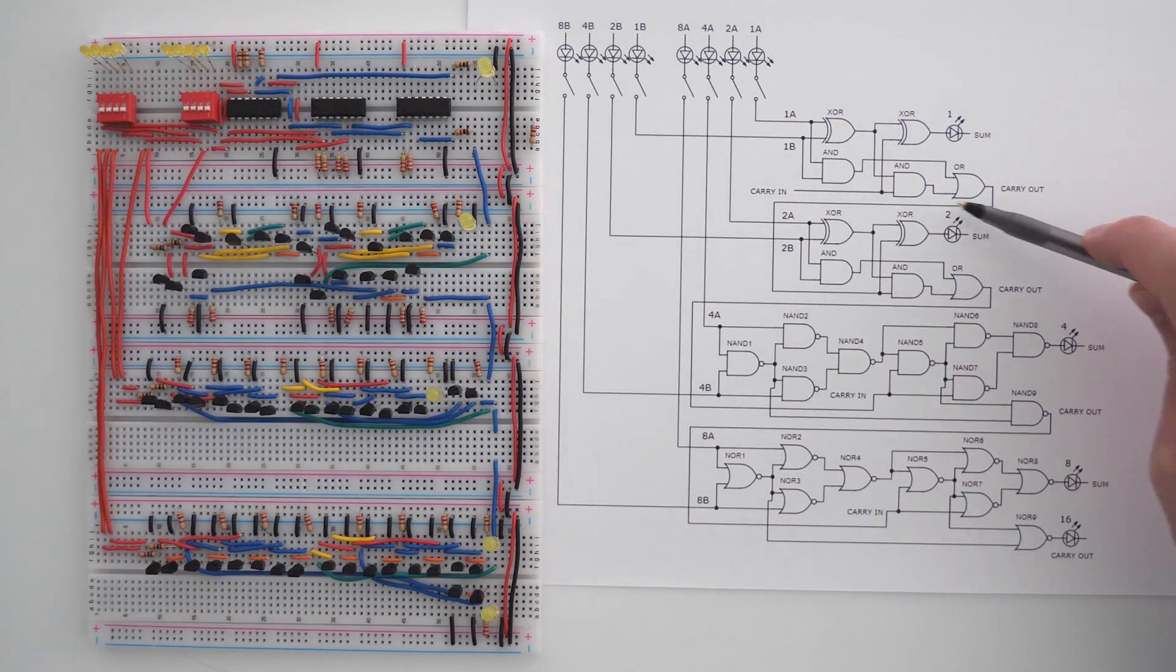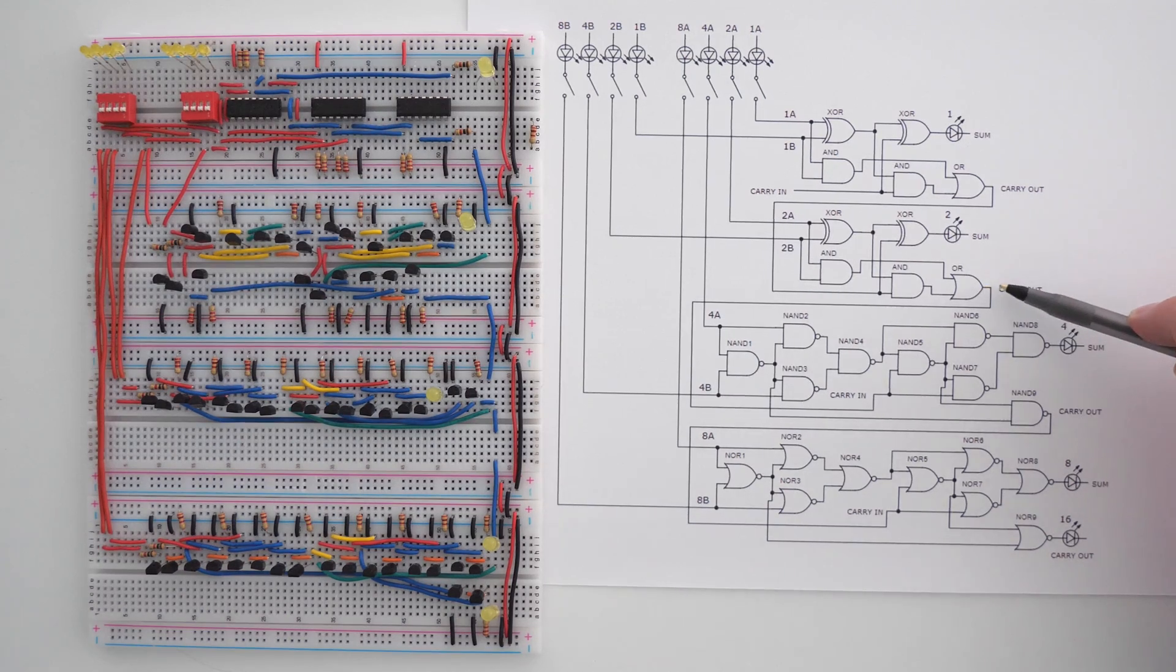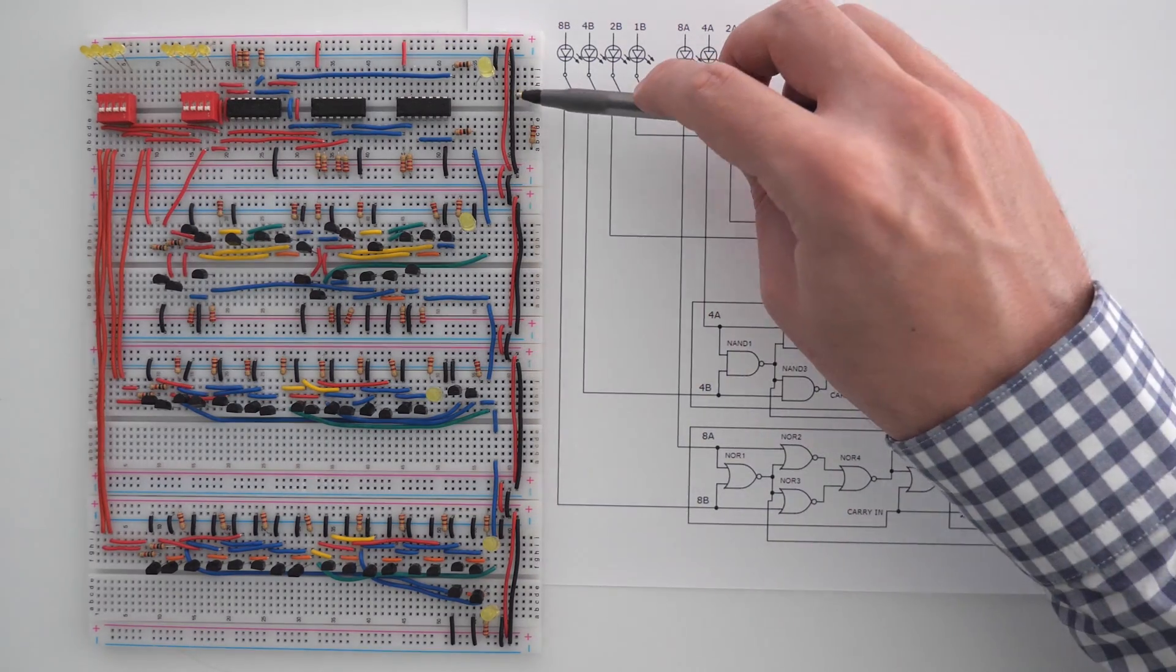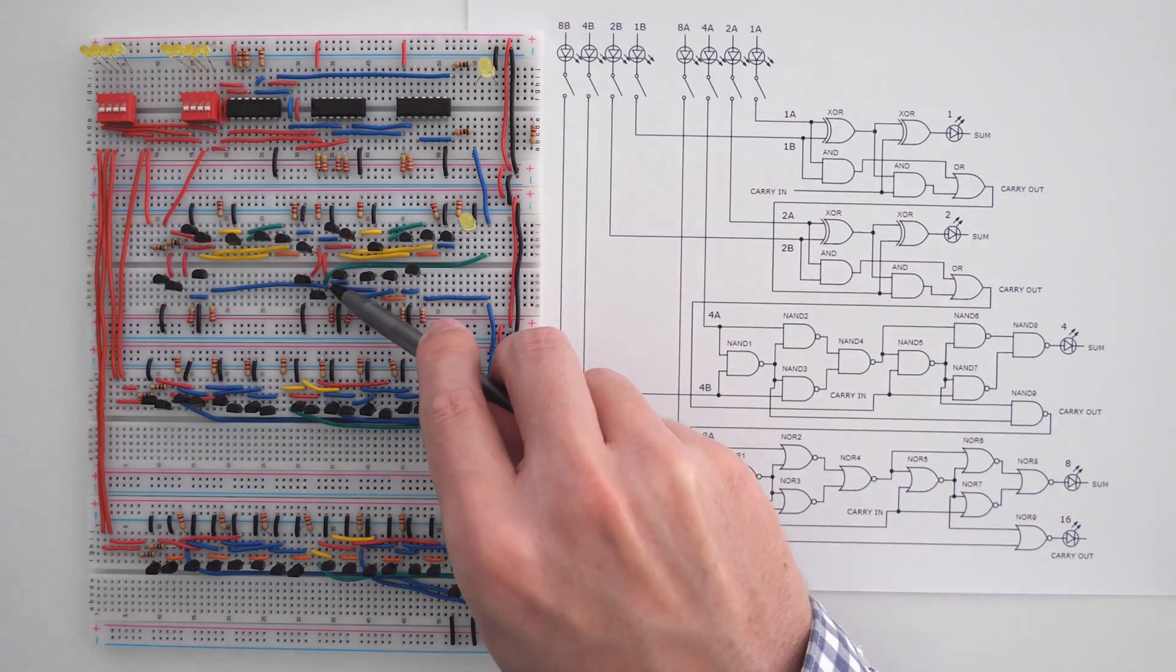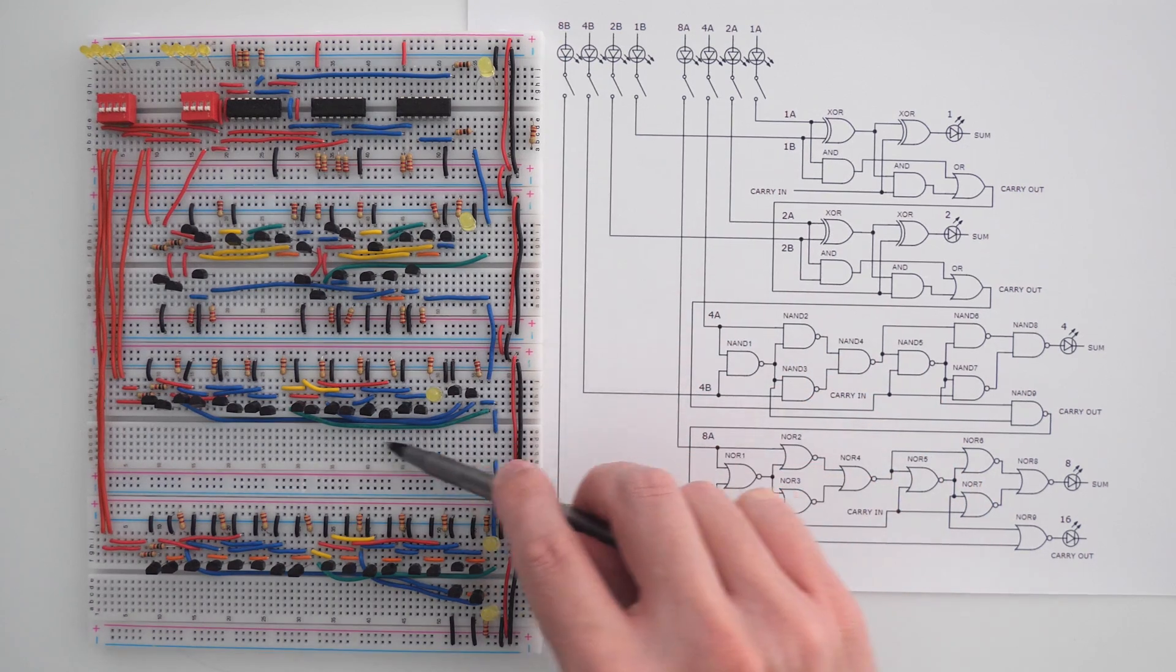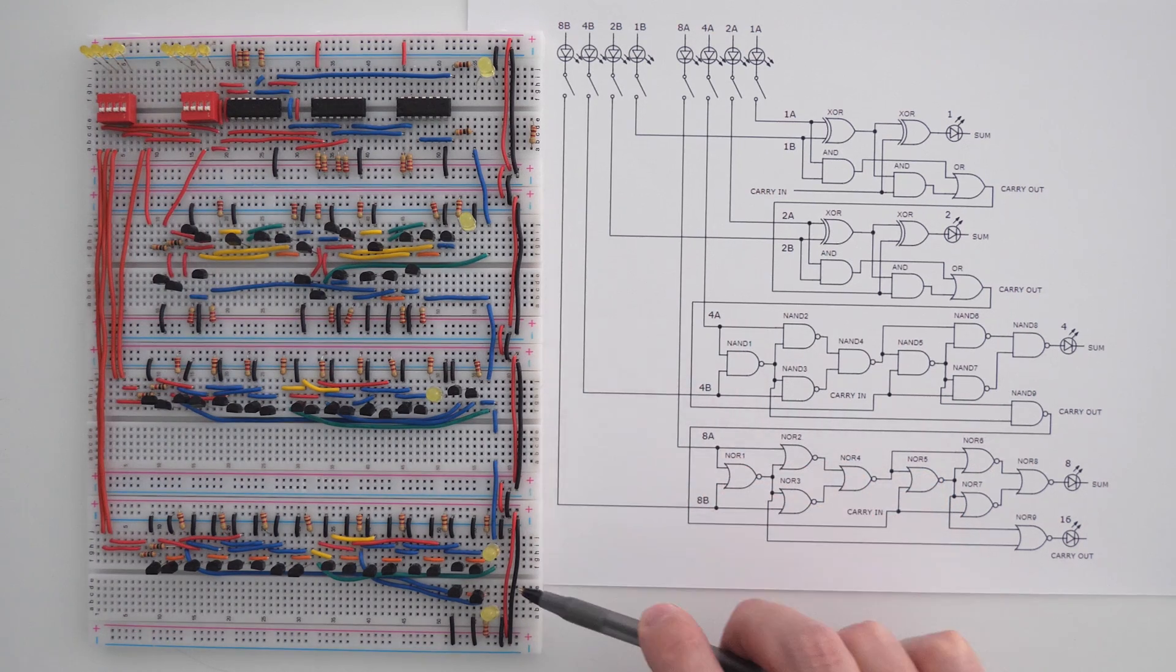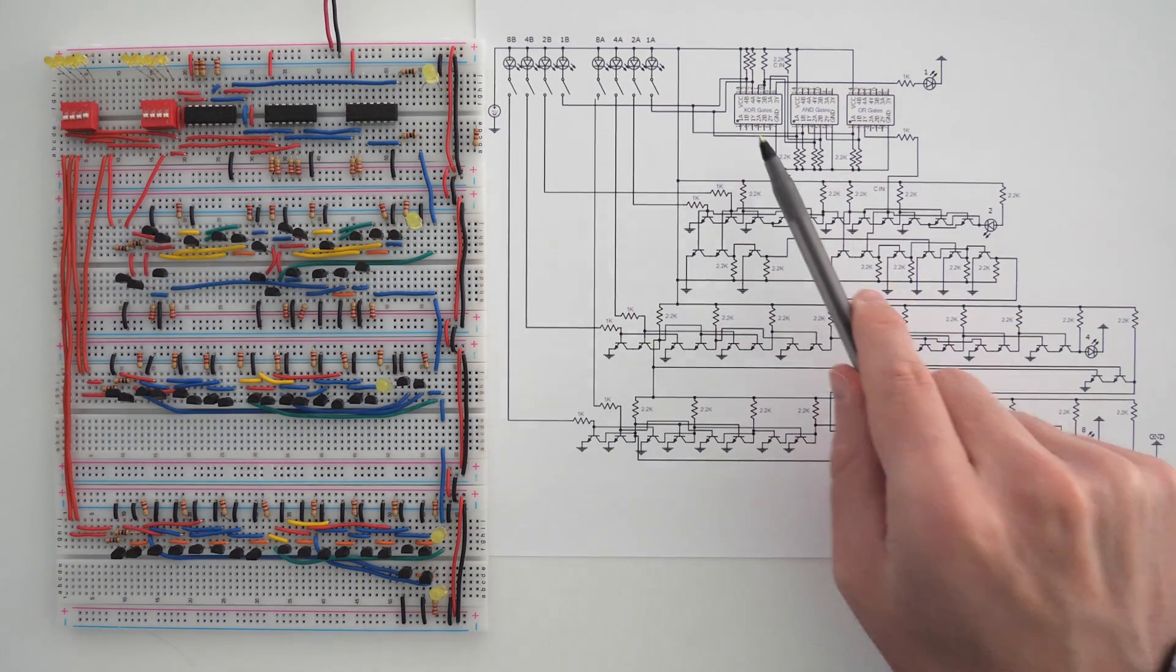The other carry outs go out the full adder, and then they go into the carry in of the next full adder. So this one goes out the carry out, and then it goes into the carry in. Same with this one. It goes out the carry out, and then into the carry in. If you look at the circuit, this blue wire is the carry out, and then it goes across this green wire and into the carry in. And then the carry out goes out this blue wire, across the green wire, and into the carry in. And the same thing here. It goes out the blue wire, into the green wire, and then into the carry in slot.